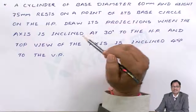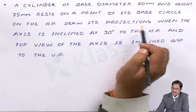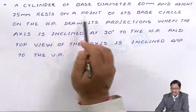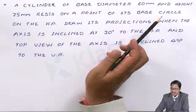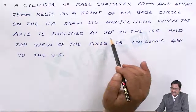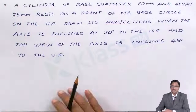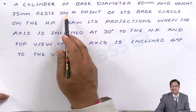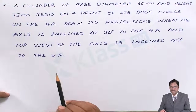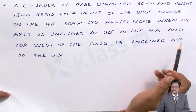First try to observe the resting condition. The resting condition is: it rests on a point of its base circle on the HP. That means the resting condition has been given clearly. After that, the other conditions: the axis should be 30 degrees with HP, and the top view of the axis should be 45 degrees to the VP. So the solid details are: diameter 60 mm, height 75 mm, resting condition is a point on the HP of the base, axis 30 degrees with HP, and top view of axis 45 degrees with VP.